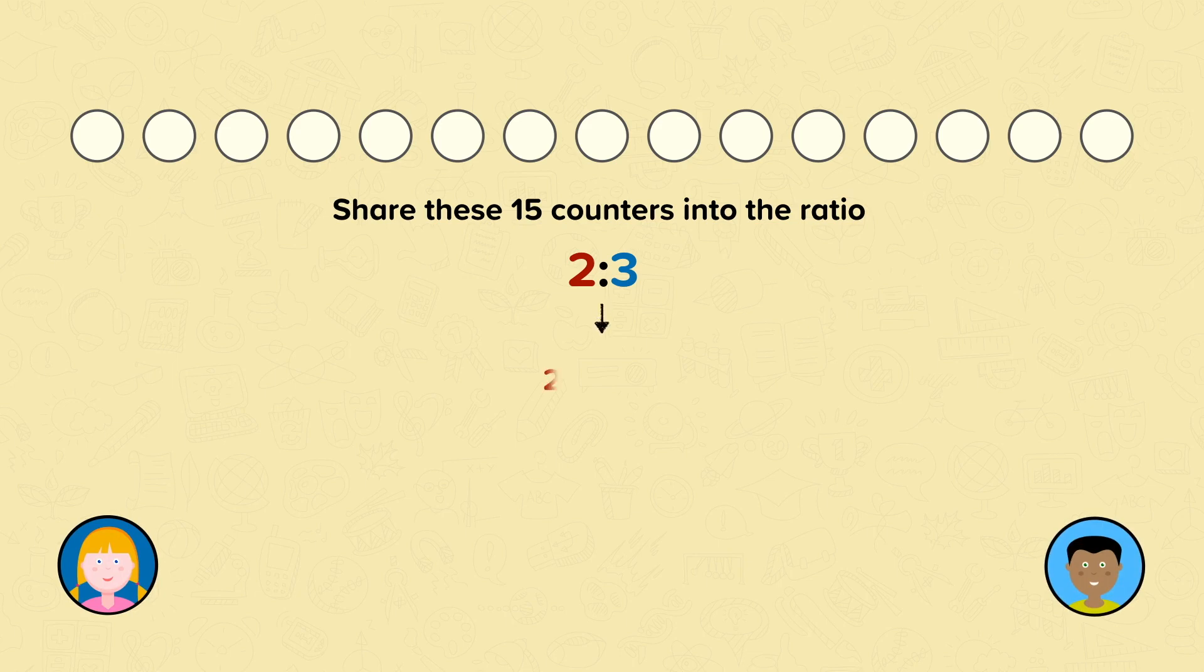Share these 15 counters into the ratio 2 to 3. First, we need to find the total number of parts. For the ratio 2 to 3, you need to add both sides of the ratio: 2 plus 3 equals 5.